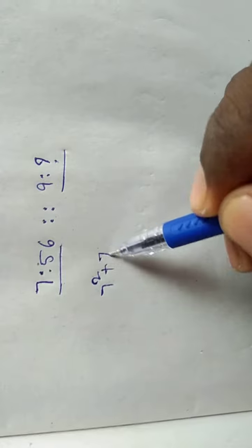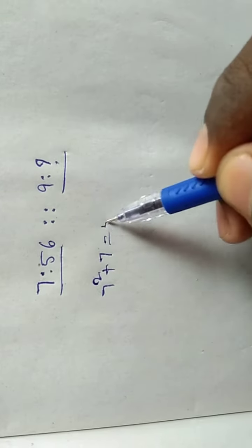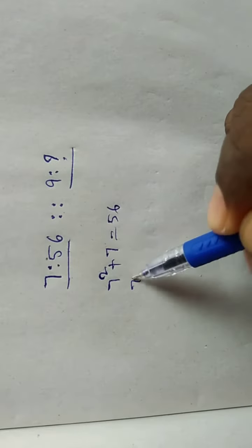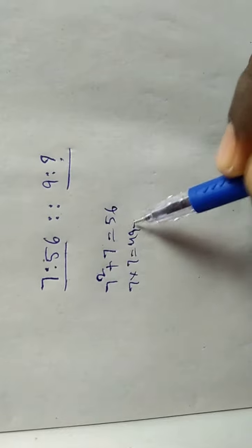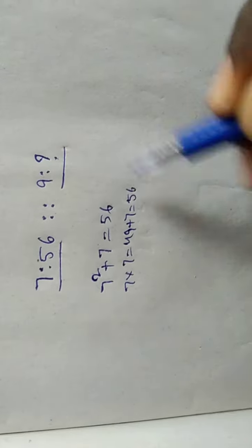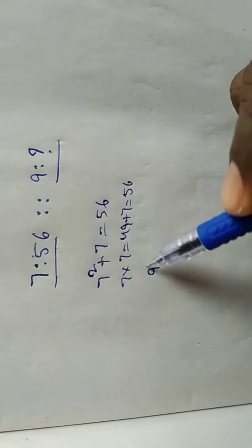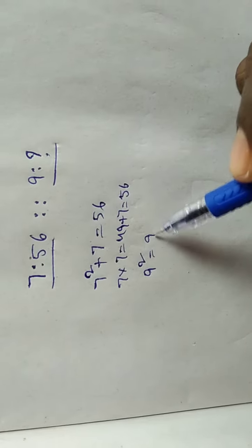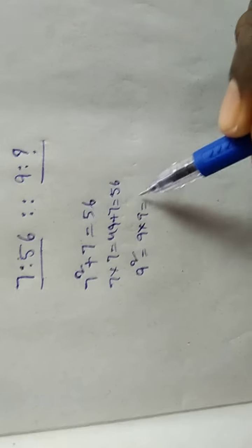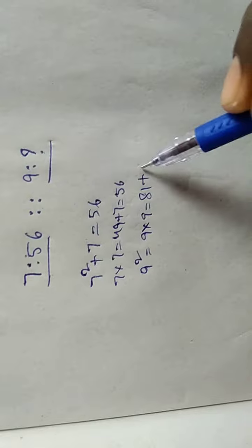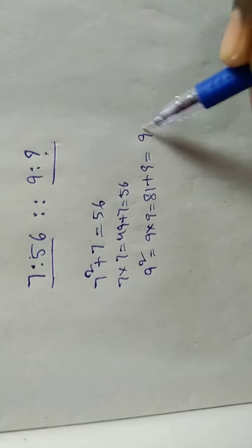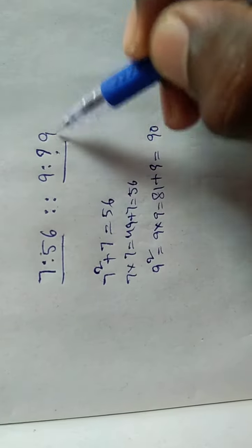Seven square is 49, so 49 plus 7, that is equal to 56. Similarly, ninth square is 81, 81 plus 9 equals 90.